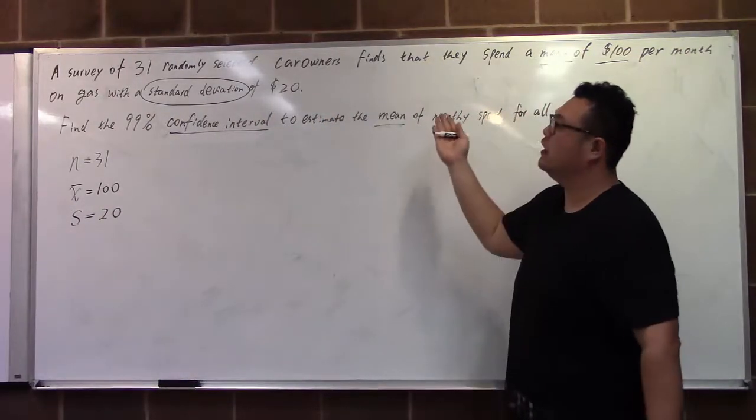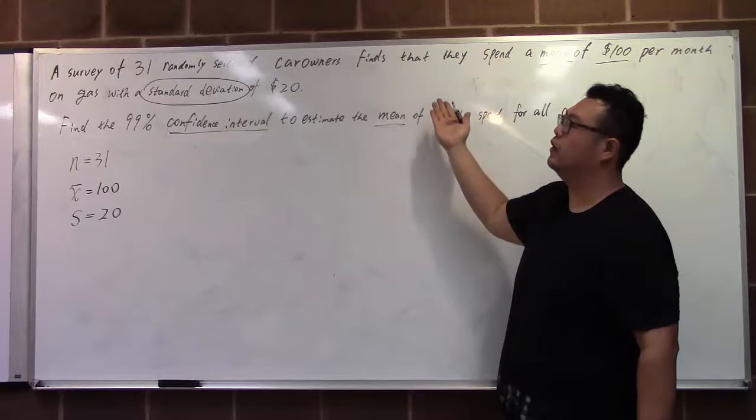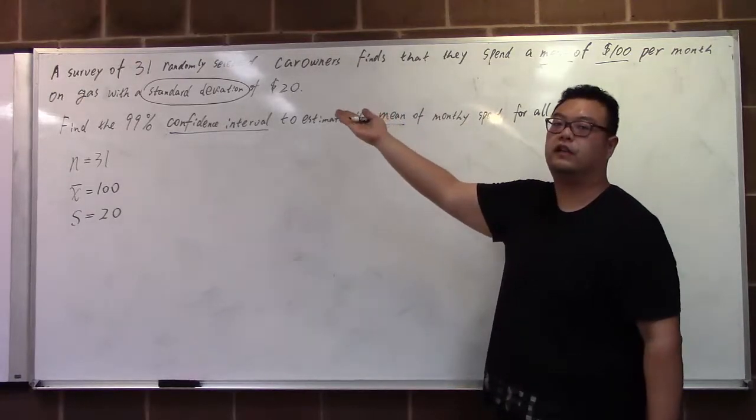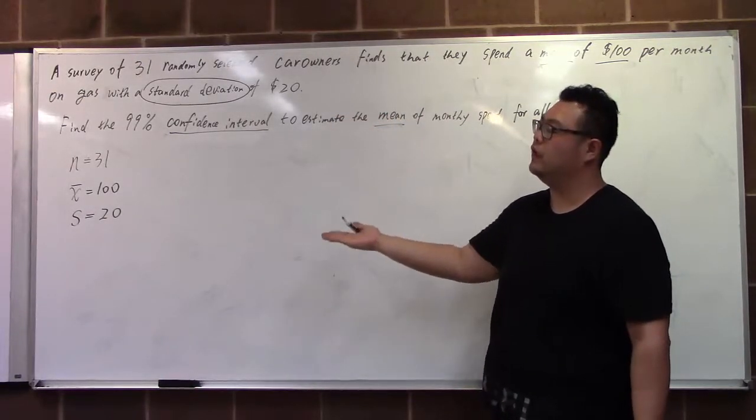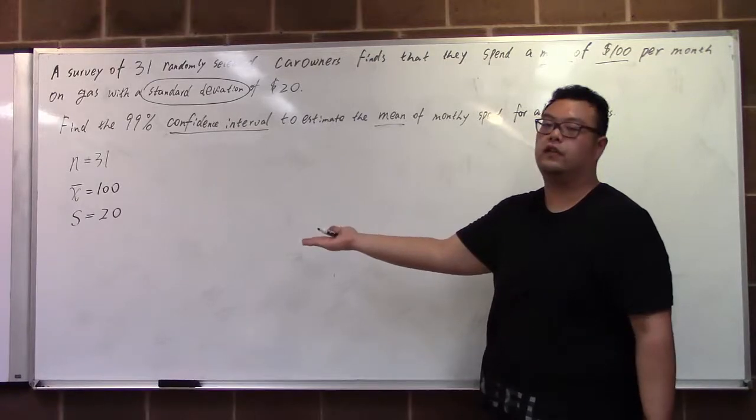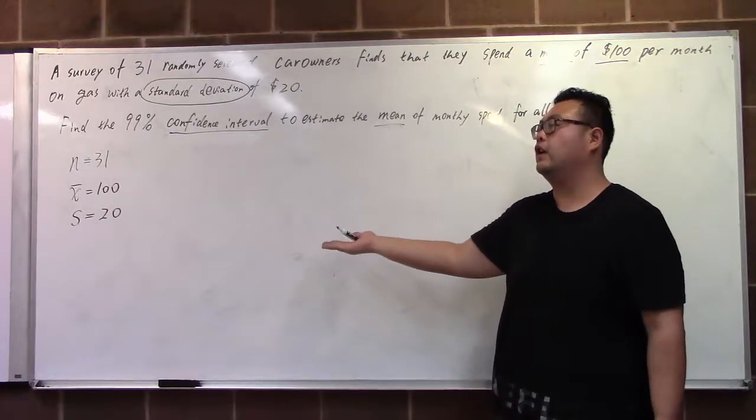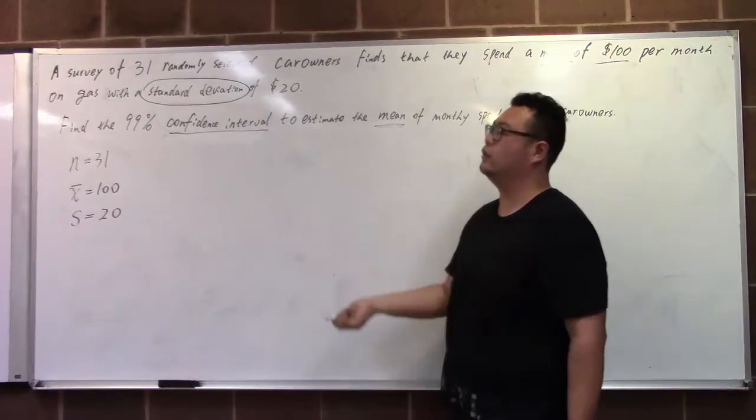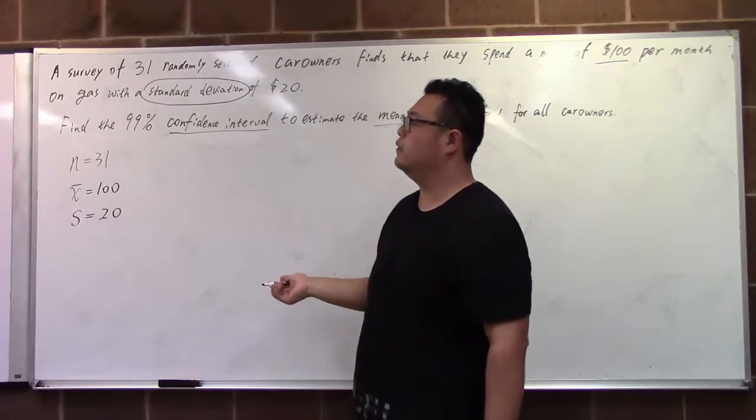No other assumptions are made—they didn't assume normality, but our sample size is large enough. Also, they gave us the sample standard deviation only. Therefore, we'll use the t distribution to estimate it.